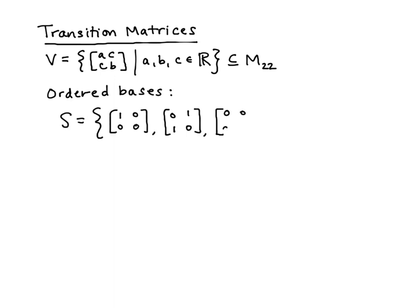So here are two different ordered bases for this vector space V. The first one, S, looks kind of like what you would expect it would, and the second one, T, is a little bit more exotic. They're both bases, and as we know, ordered bases means the order matters.